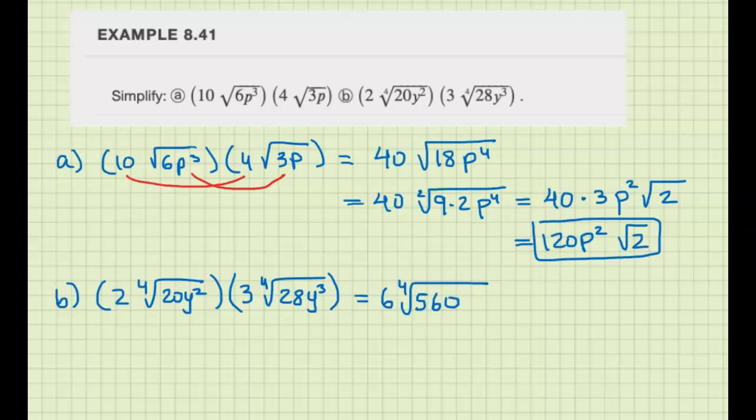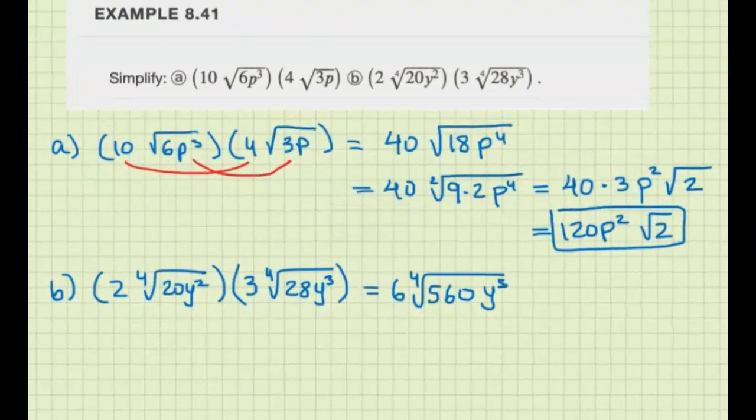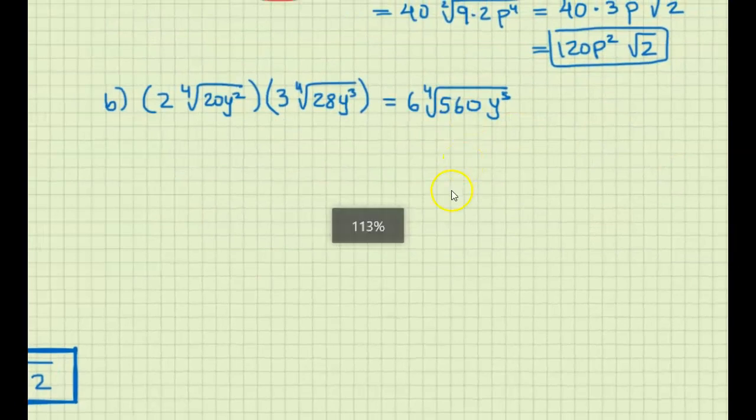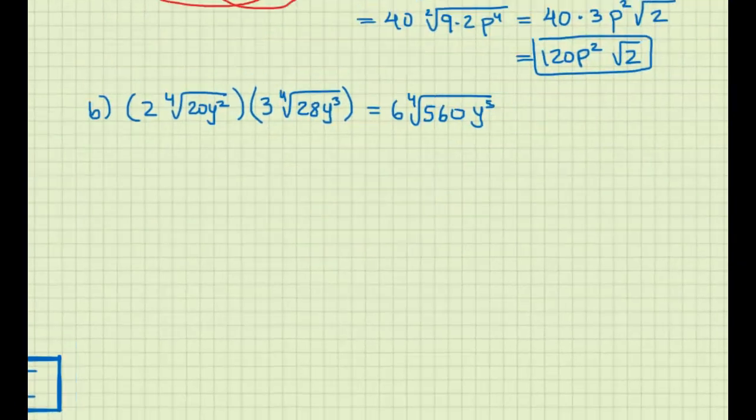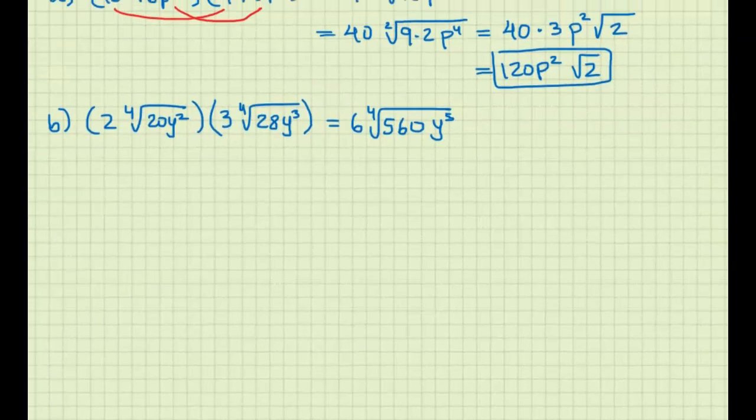Now we should simplify this. I need to do the factor tree on this one because I can't tell what's a perfect fourth root—that number is big. So let's do the factor tree.